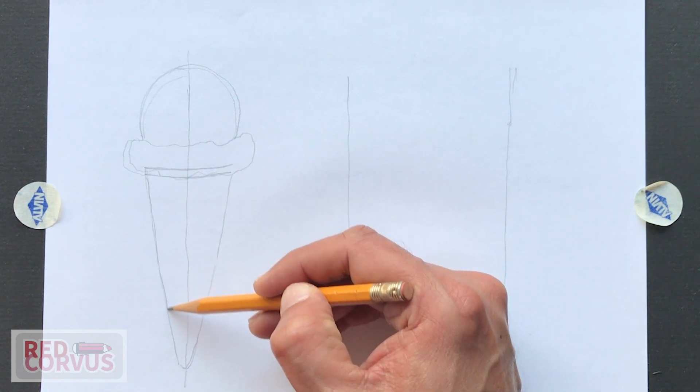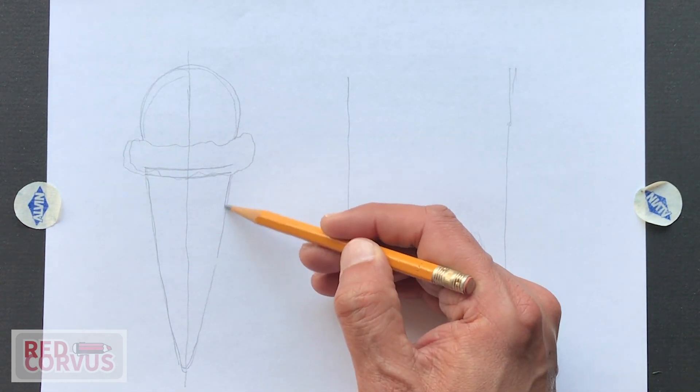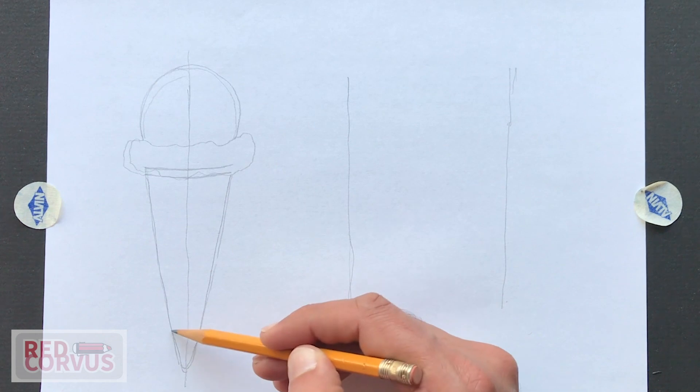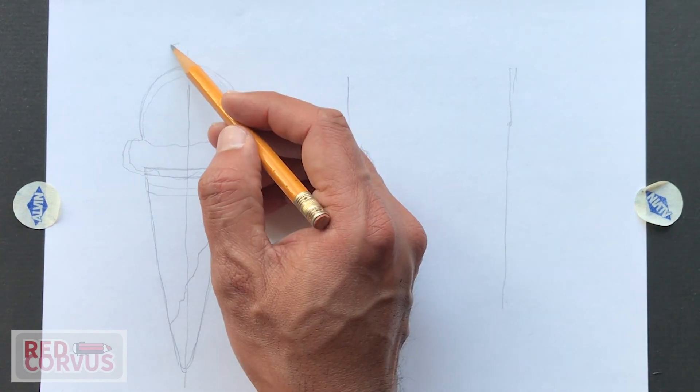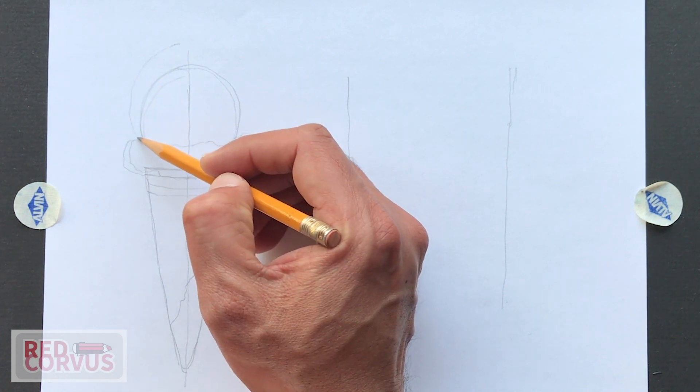So I'm going to refine these lines a little bit. And then this is the flap of the waffle. The scoop I drew looks a little bit small. So I'm going to make it larger.